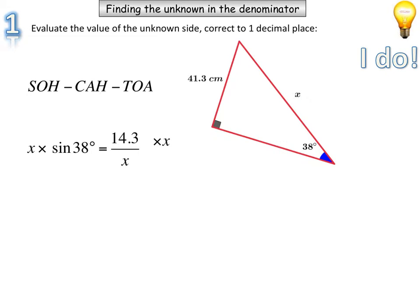Multiply both sides by the denominator. Cancel the values that we have the same on the top and the bottom, so that's the x. So x times sine 38 is equal to 14.3. Remember, sine 38 is just a number, it's the ratio. So what we can do to work out what x is, is divide both sides by sine 38.